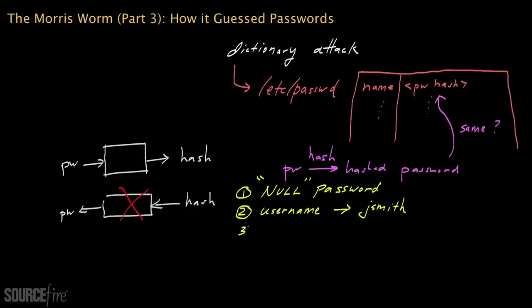The third thing the Morris worm tried is the username of the user concatenated with itself. So for example, if the username was jsmith, the worm would try jsmith followed by itself—jsmithjsmith.